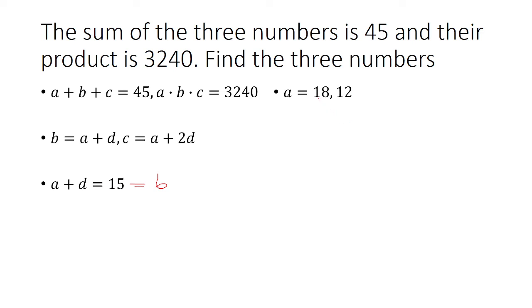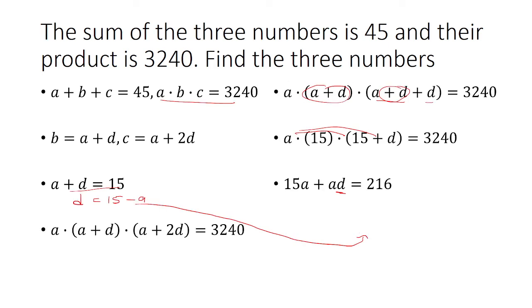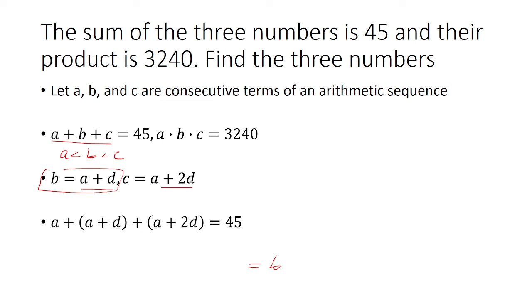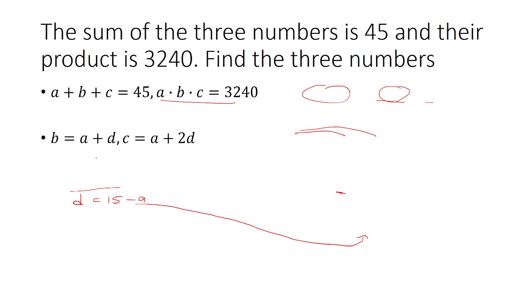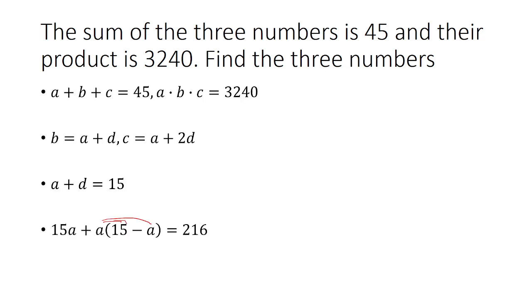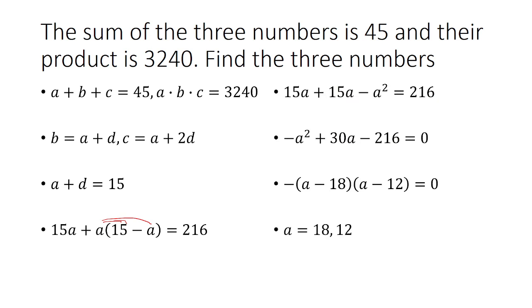If we plug in A is 18, then you have A being greater than B, which we assumed was not the case. So if we go back here, we assumed that A was less than B. So that would not work. So therefore, we'll say that A has to be 12.